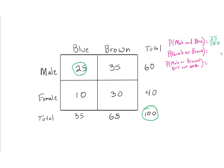What's the probability of being female OR brown-eyed? We're looking for examples that meet at least one condition. The block of 10 is female and blue — meets the female condition. The block of 30 is brown and female — meets both. The block of 35 is brown and male — meets the brown condition. The block of 25 is blue and male — meets neither. So the answer is 10 plus 30 plus 35, which is 75 over 100.